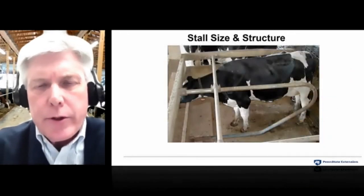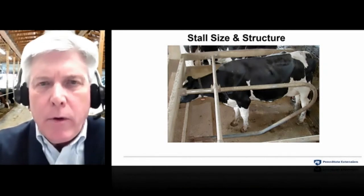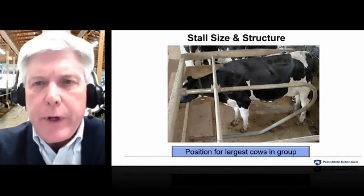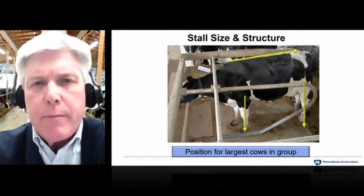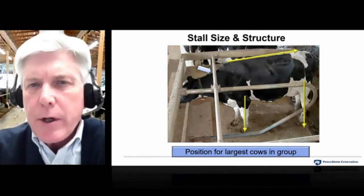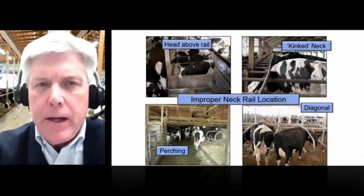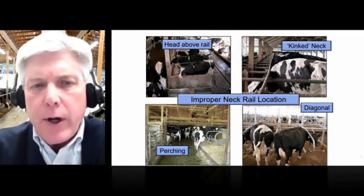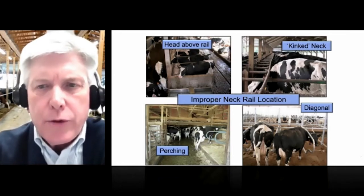Stall size and structure are very important in free stalls. Cows don't crawl into stalls — they allow the stall to fly down on them. I like to see a structure where the largest cows can stand with all four feet on the stall surface, backbone level, front and rear legs square under her, and maybe just touching the neck rail. If a cow is pressing hard against the neck rail, perching half in or half out, or standing diagonally, it's an indicator the neck rail is either too low or too far back.